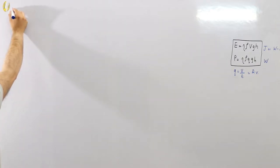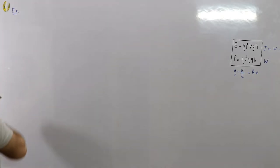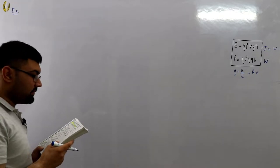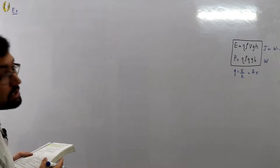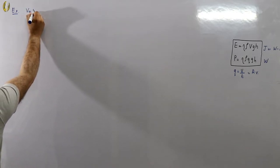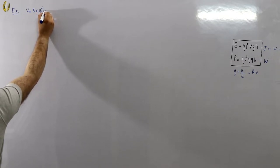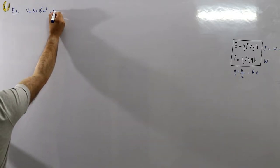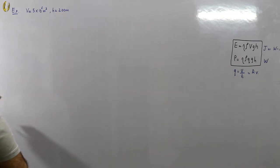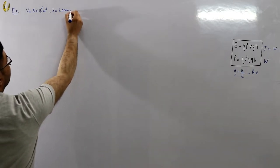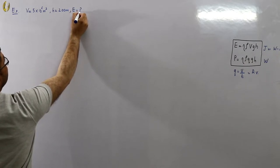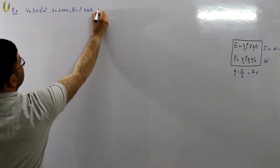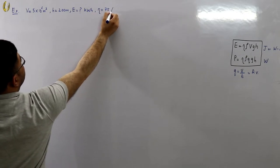Let's look at some simpler examples. First: a hydroelectric generating station is supplied from a reservoir of capacity 5×10⁶ cubic meters, at a head of 200 meters. Find the total energy available in kilowatt-hours if the overall efficiency of the system is 75 percent.